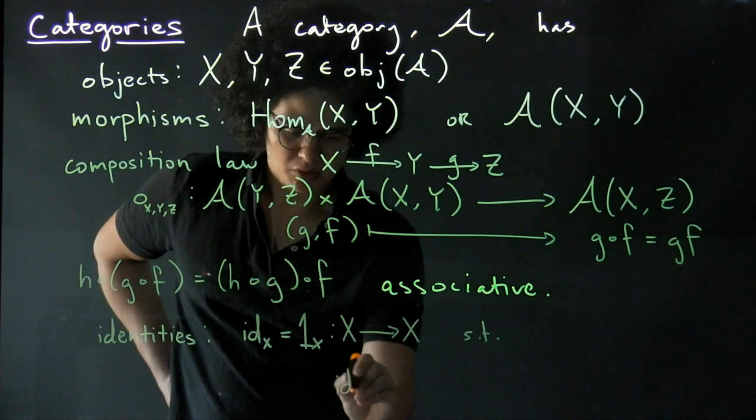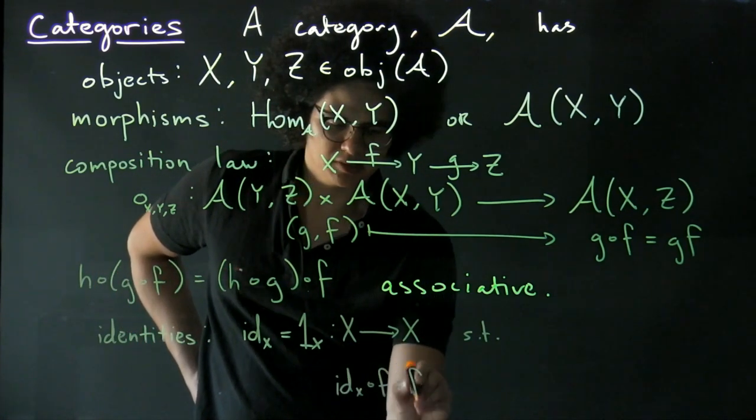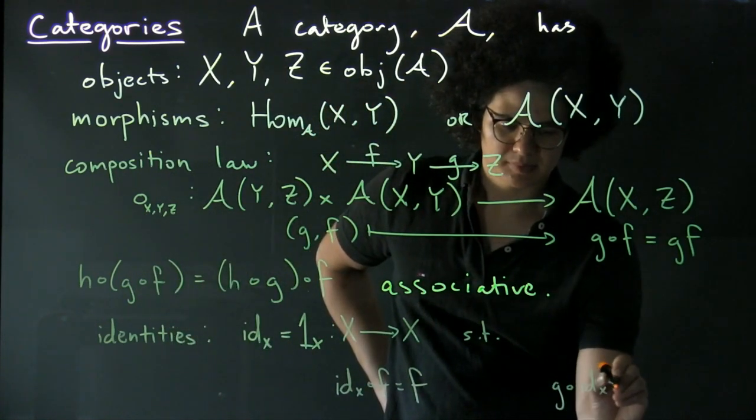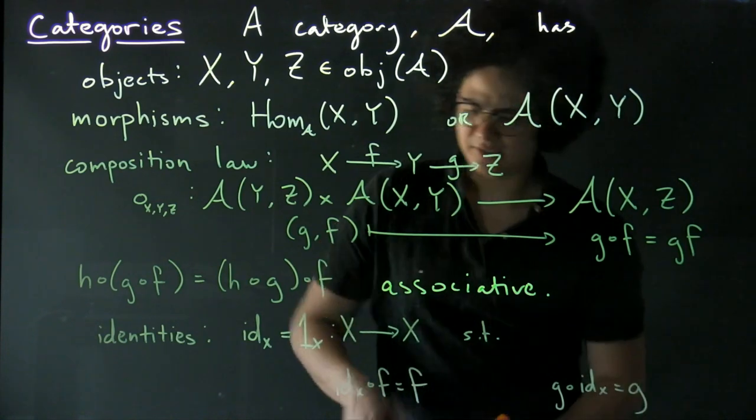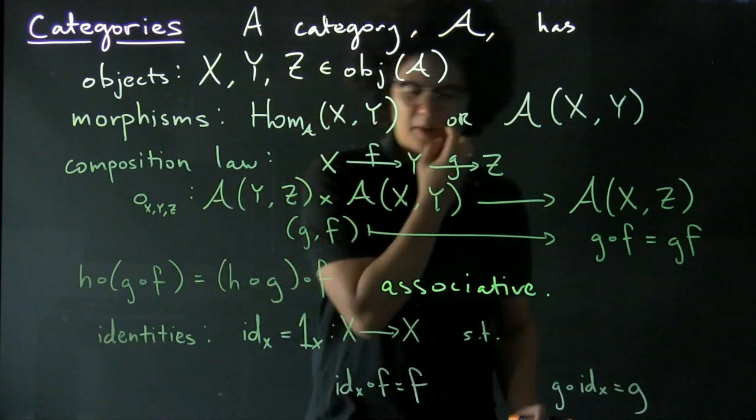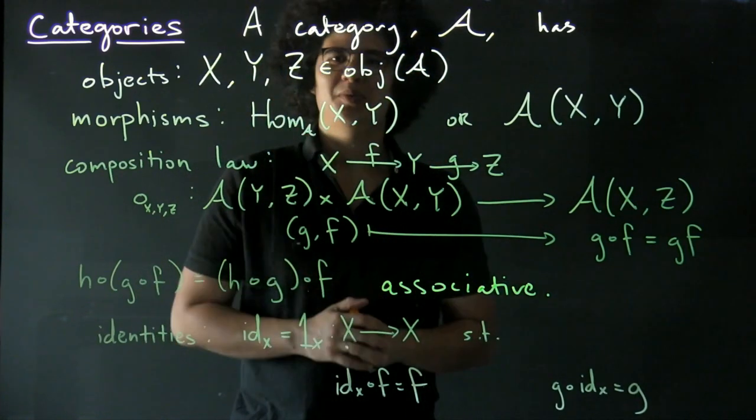if you compose it with any other morphism, you get back that same morphism. Obviously, you can only do the composition where it's well-defined. Alright, and that's what a category is.